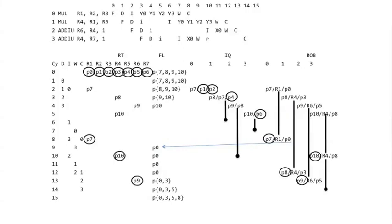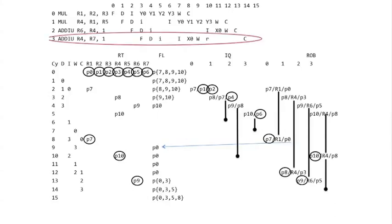Now let's walk through a basic execution example. At the top we have four instructions — two multiplies and some adds — our original test case. Note all the dependencies through register four: read-after-write, write-after-read, and write-after-write dependencies. We're going to execute it, and the final add issues early, which is really driven by register renaming.